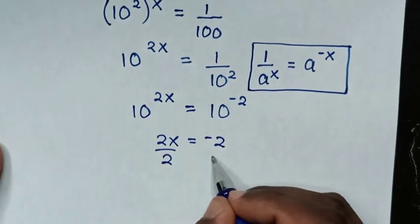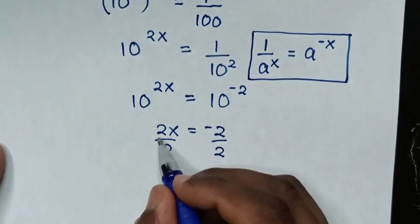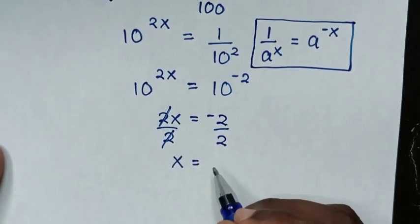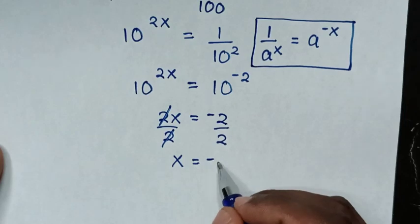So we'll divide by 2 in both sides. Then this and this will cancel so it will be x is equal to negative 2 divided by 2 is negative 1.